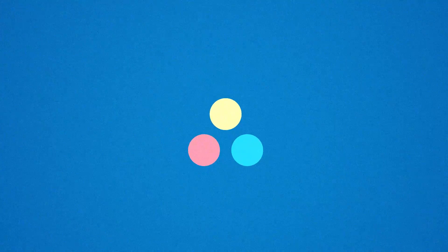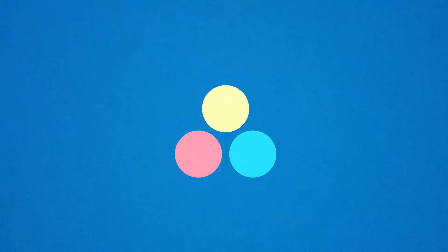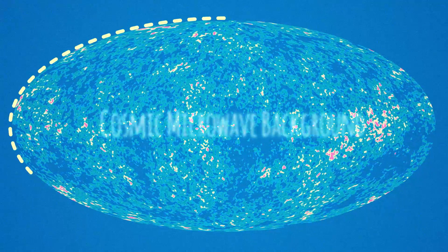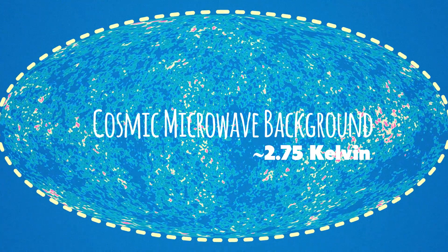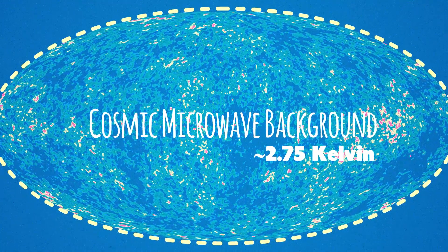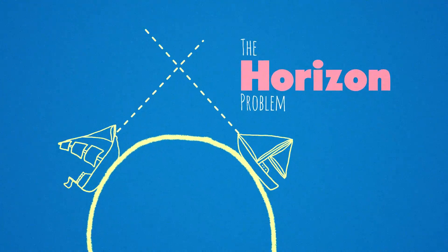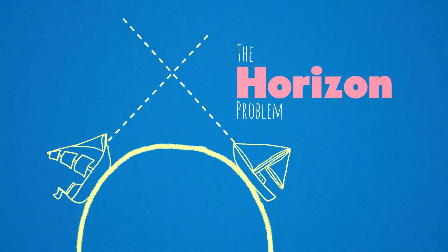In the first instance of the Big Bang, some parts of the universe would have been hotter or colder than other parts. But today, everywhere we look, the universe is basically the same temperature. And that shouldn't really be possible. This is called the horizon problem, and we'll get to why it's called that in a minute.